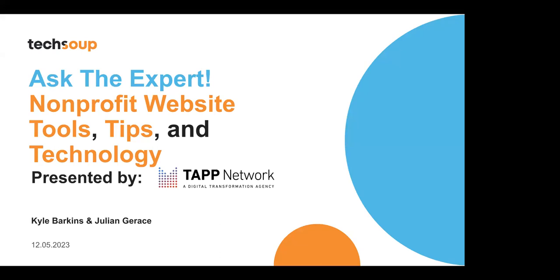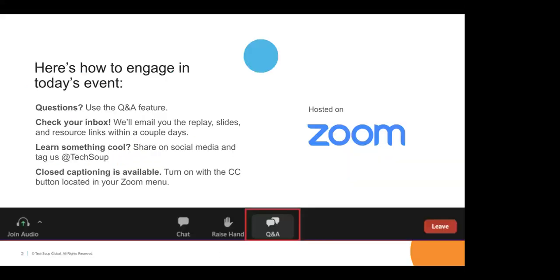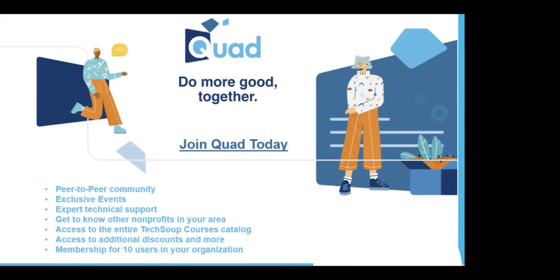I want to share something new and exciting here at TechSoup. It's called Quad. Quad is a peer-to-peer community inside of TechSoup. We have exclusive events just for nonprofits. You can get technical support. One thing I love about Quad is that you can have access to the entire TechSoup courses catalog, and 10 members of your organization can use it. Courses here at TechSoup can range from free to $10 to $90, but with Quad you get access to the entire course catalog.